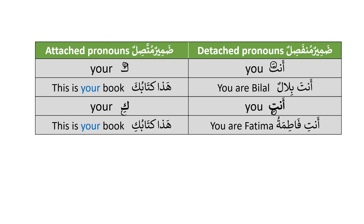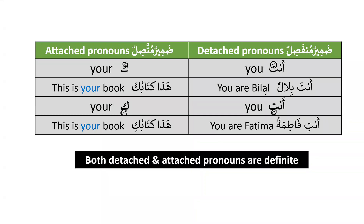In English we only have 'you,' but in Arabic we can see that we have anta and we have anti — the meaning is the same. The most important point to remember is that both detached and attached pronouns are definite; they are basically ma'rifa. Whether used independently or dependently, they are always definite nouns.